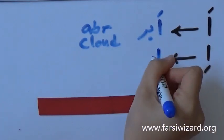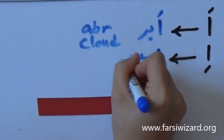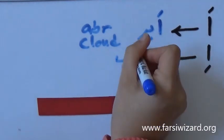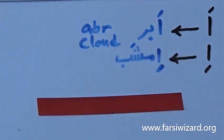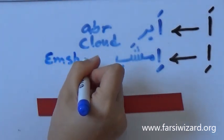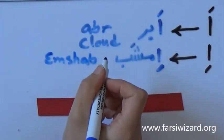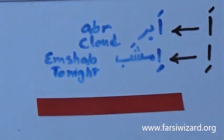The second case, the example is a little bit more complicated. It is the word Emshab. Now, you are already familiar with a couple of these letters here. You already know B, you already know Shin. Emshab means tonight.